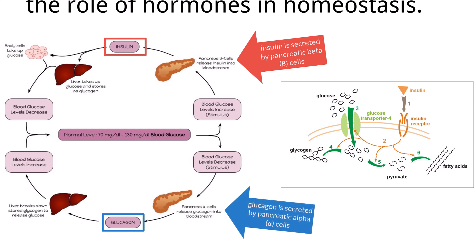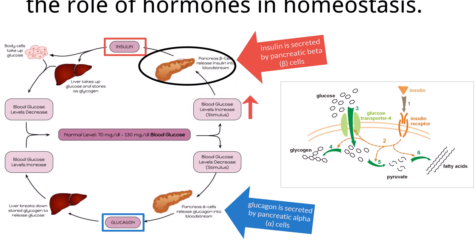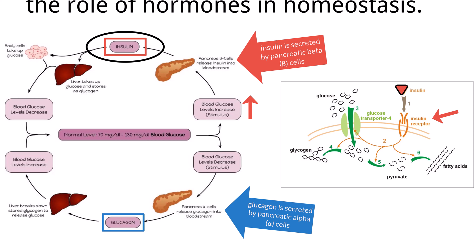When blood glucose levels rise after eating, beta cells detect the increase and secrete insulin into the bloodstream. Insulin binds to insulin receptors on body cells, triggering the uptake of glucose through glucose transporters like GLUT4. Recall that glucose is a hydrophilic molecule and cannot pass through the hydrophobic lipid bilayer of the cell membrane by simple diffusion. GLUT4 is a carrier protein embedded in the membrane that enables glucose to enter the cell via facilitated diffusion.